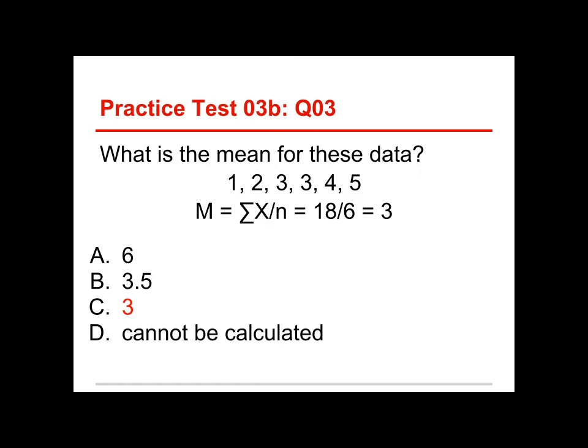And that's the number of scores. So in this case, if you add up those numbers—one, two, three, three, four, five—you get 18. That's the sum of x. The number of scores is six, because there are six numbers there. So 18 divided by six is equal to three. And so three is the mean of these data.